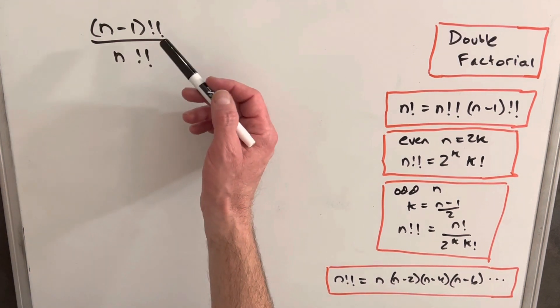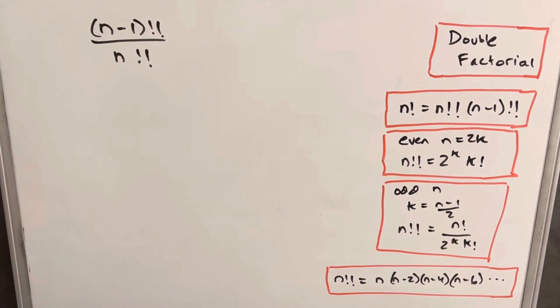Hey, in this video what I'd like to do is find an expression for n minus 1 double factorial over n double factorial.